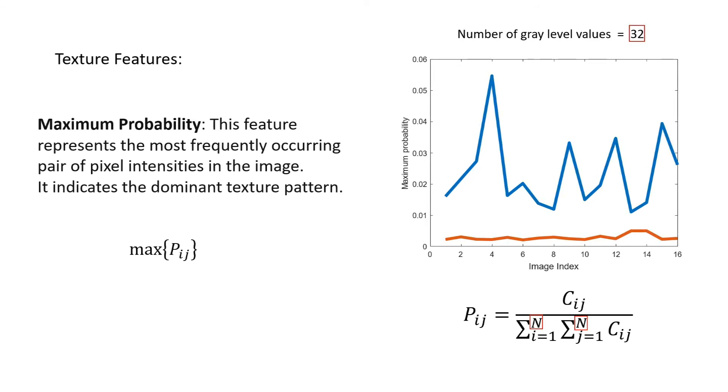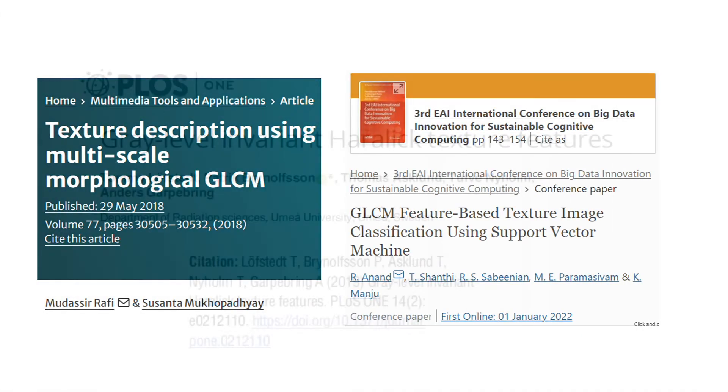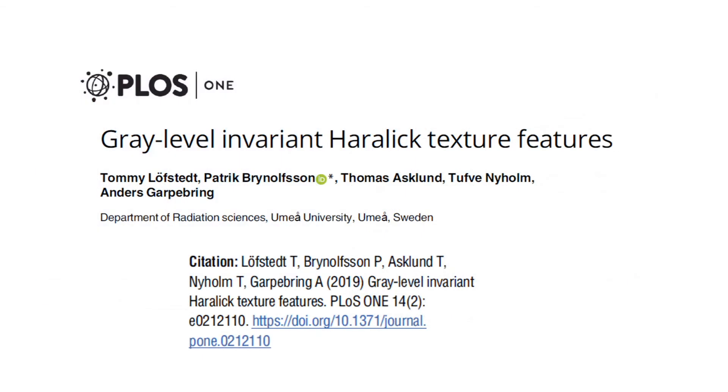Here n corresponds to 32, the total number of gray level values. More texture features can be defined from the co-occurrence matrix and they can be found in the references. I will be using a small dataset consisting of 16 images per class. Several features and a brief description of them will be presented until the end of the video.